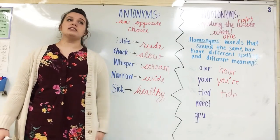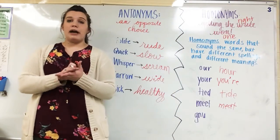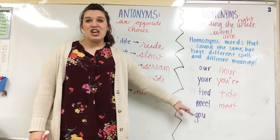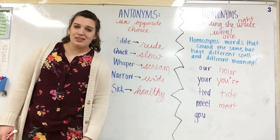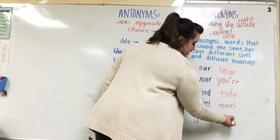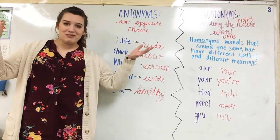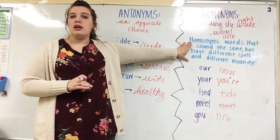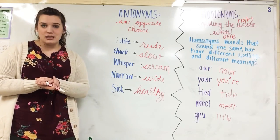The last one is a fun one: G-N-U says 'new' — the G is completely silent. That's a type of animal, and it's fun to look up just because of the spelling. It sounds exactly the same as N-E-W — 'I can't wait to get a new car.' So those are homonyms: words that sound the same but have different spellings and different meanings. Antonyms are just the opposite — the best opposite word choice. Look at your assignment to see what your homework is. I'll see you tomorrow.